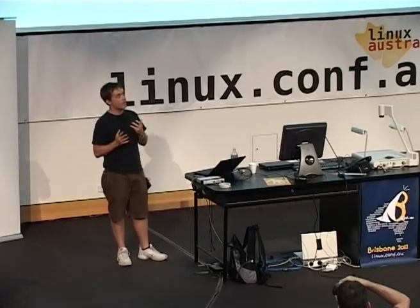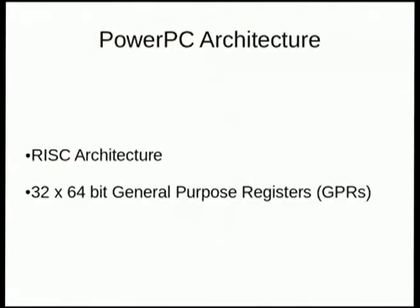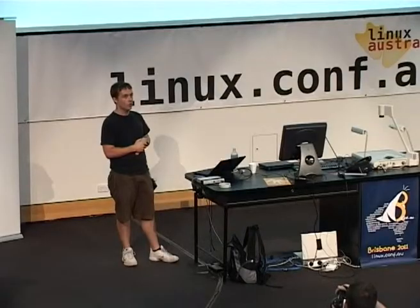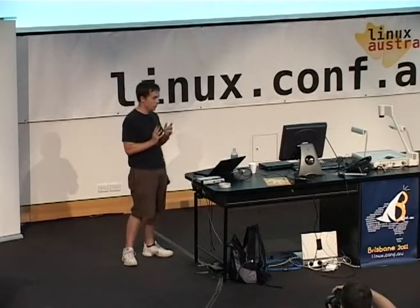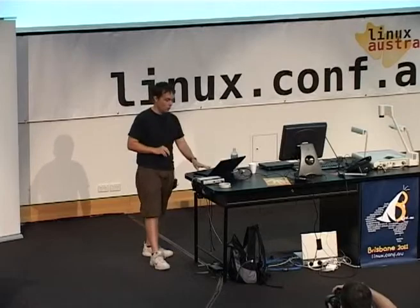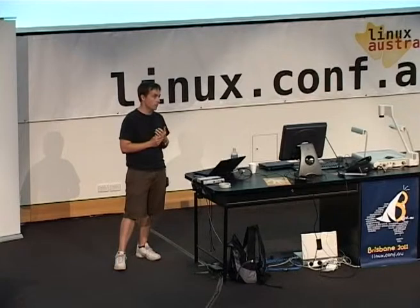So, PowerPC architecture — a quick overview of what it means in relation to context switching. PowerPC is a very simple RISC architecture. We have 32 64-bit general purpose registers. These GPRs are used on almost every instruction by every task in the system, and they're always context-switched in and out. We also have some floating point registers — 32 64-bit registers, that's about 256 bytes worth of data, a couple of cache lines in PowerPC.